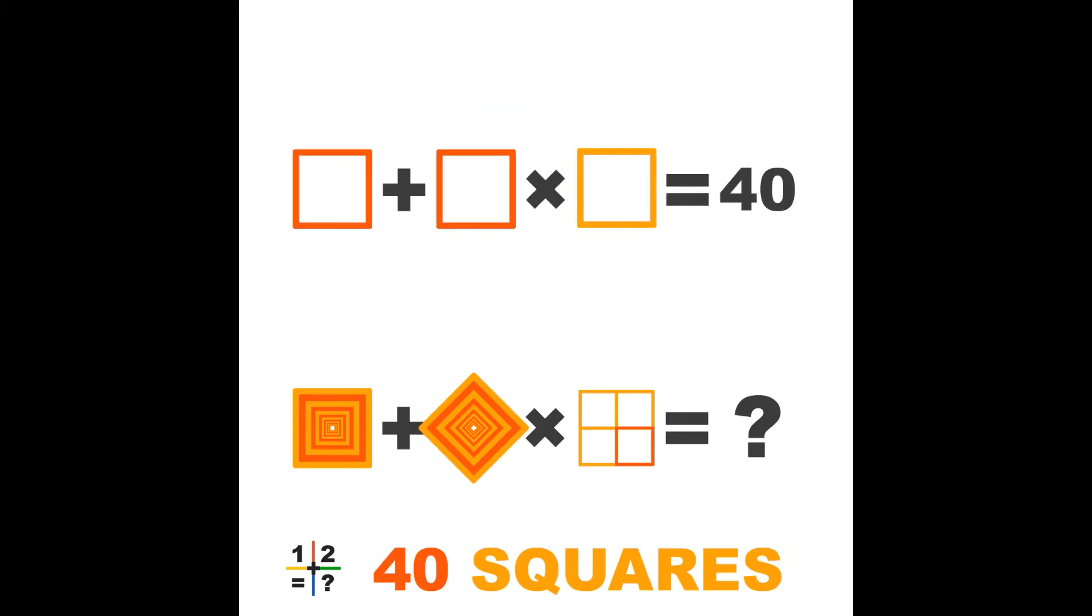The second line: two times an orange square and one yellow square. Orange plus orange times yellow equals 40. Orange plus orange times 4 equals 40. So the orange square must be 8.